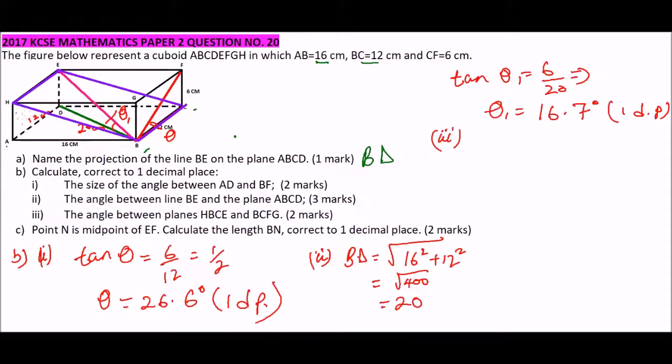So we have what is in blue, that is our plane HBCE. And therefore, this is the angle that we are interested in. This we can call it theta 2. And therefore we can say tan theta 2 is equals to opposite is 6 divided by 16. And that should give us, if we divide by 2, this is 3 over 8. The tan inverse of this, it means our theta 2 is equals to 20.6 degrees. So that's how we work it out.